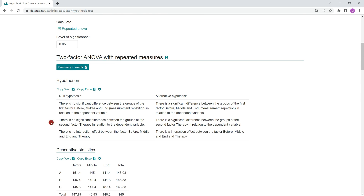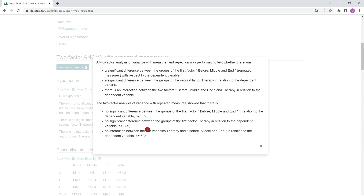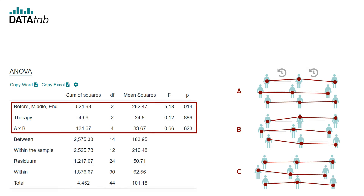If you don't know exactly how to interpret the results, you can click on Summary in Words. Most important in this table are three rows. With these three rows, you can check whether the three null hypotheses we formulated are retained or rejected. The first row tests whether blood pressure changes over time — whether the therapies have an effect on blood pressure. The second row tests whether there is a difference between the therapy forms with respect to blood pressure, and the last row checks if there is an interaction between the two factors.